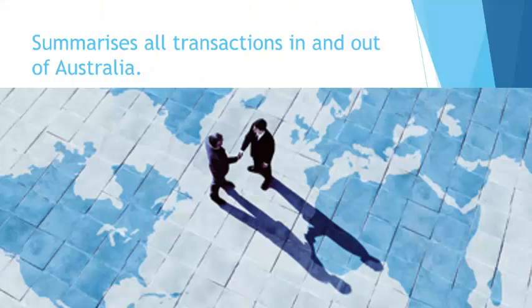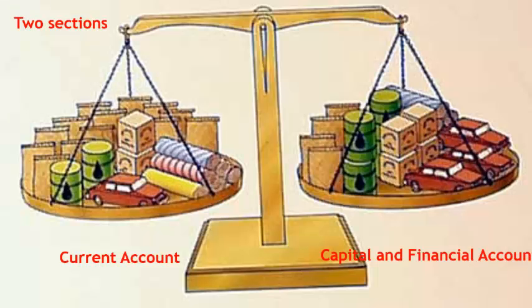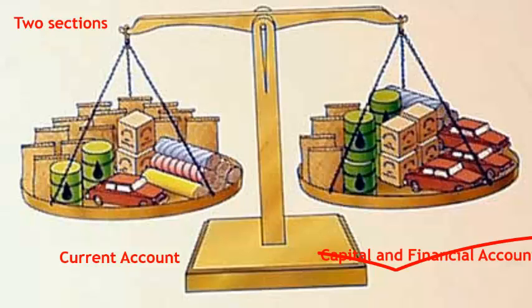What it does is summarise all the transactions in and out of Australia — every currency transaction between us and the rest of the world. There are two sections that we talk about. One is called the current account, which I'll explain more in a moment. Another one, which balances all the financial transactions coming into Australia, is the capital and financial account.